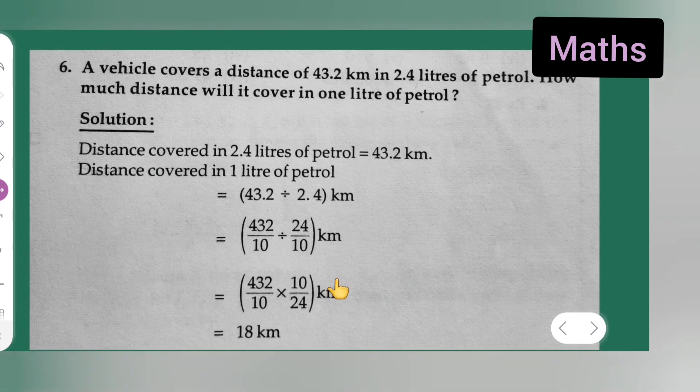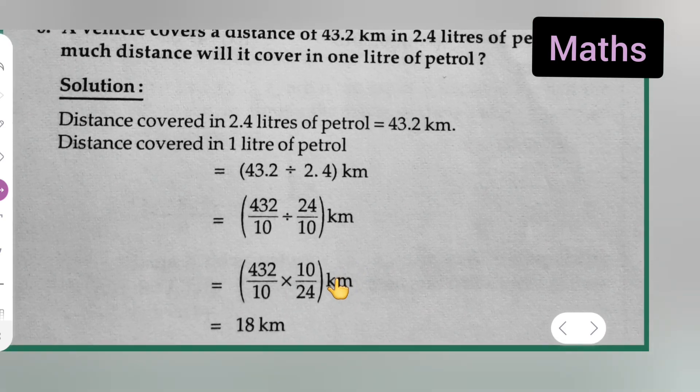I hope you all can see this clearly. So first thing is, 10 and 10 will get cancelled. So what will remain is 432 upon 24 divided. Whatever is getting cancelled,